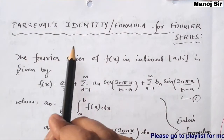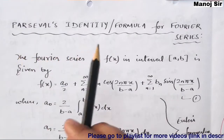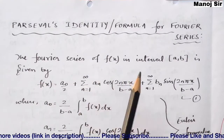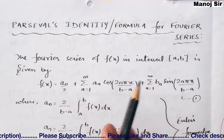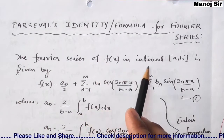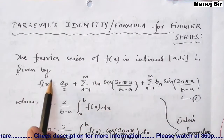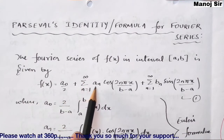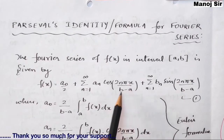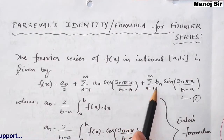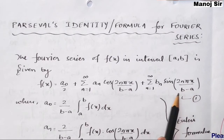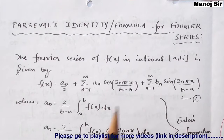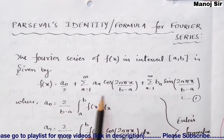We are starting Parseval's identity, also called Parseval's formula for the Fourier series. The Fourier series for any function f(x) in the interval (a, b) is given by: f(x) = a₀/2 + summation from n=1 to infinity of aₙ cos(2nπx/(b−a)) + summation from n=1 to infinity of bₙ sin(2nπx/(b−a)). This is the general formula — let's call this equation number one.